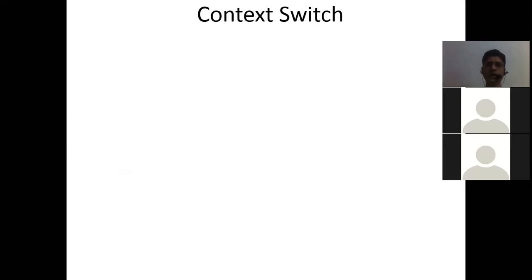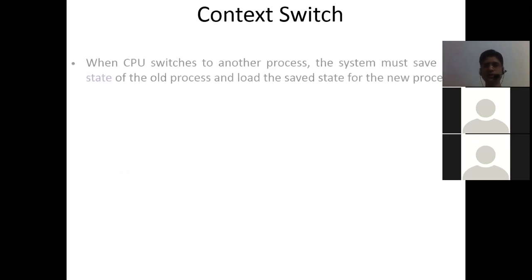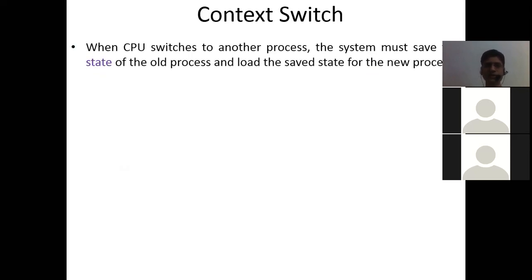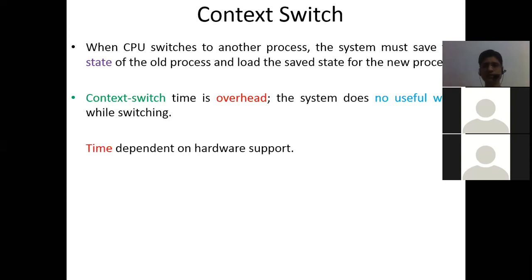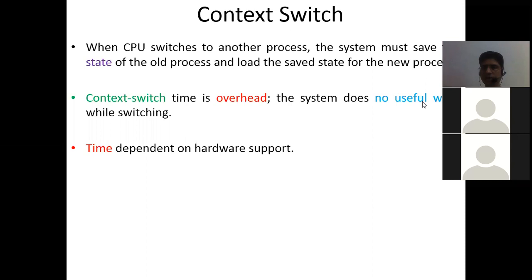There is also the concept of a context switch. When the CPU has to switch between multiple processes, it must store the state of those processes. This context switch time is basically overhead because the system does no useful work while switching. The context switch time depends upon the hardware itself.